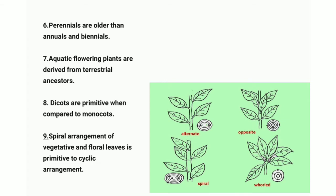Point six: perennials are older than annuals and biennials. Perennial plants have a life cycle of more than three years. Annual plants have a life span of one year, and biennial plants have a life span of two years.